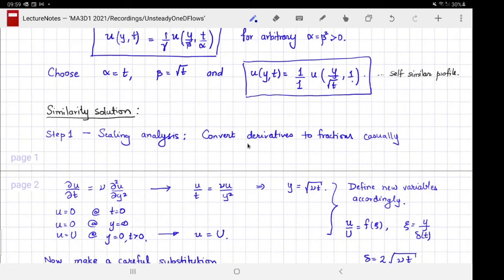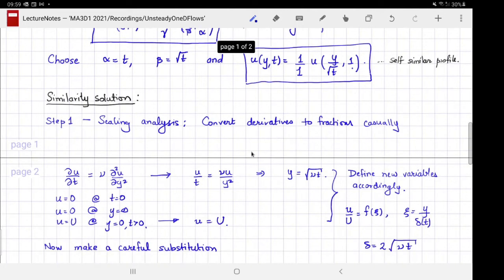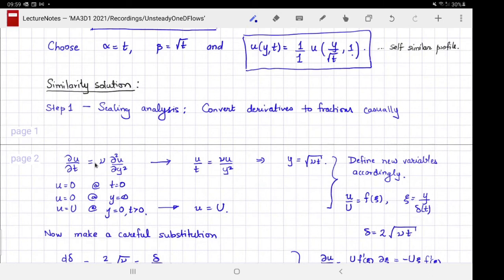In this scaling analysis, we're a bit casual just to get a sense of the terrain. We casually convert derivatives to fractions. For example, ∂u/∂t is ν∂²u/∂y². The ∂u/∂t term we write as a fraction u/t, and the second derivative in y is u/y². Factors of u cancel, and if I solve for y in terms of the remaining variables, I get y equals square root of νt.